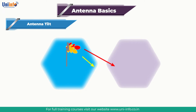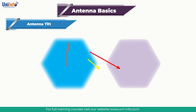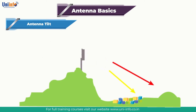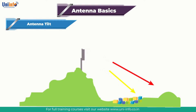With the tilt, we direct irradiation further down or higher, concentrating the energy in the new desired direction. When the antenna is tilted down, we call it down tilt, which is the most common use. If the inclination is up — very rare, used only in extreme cases — we call it up tilt.